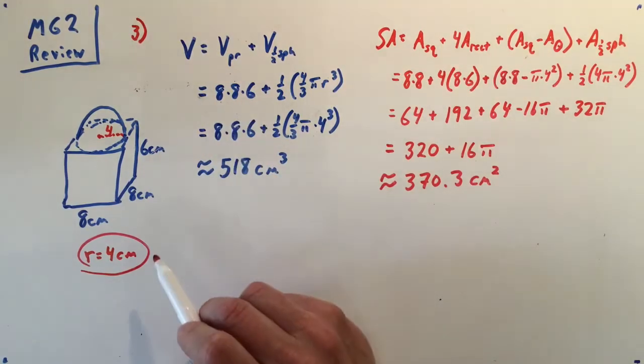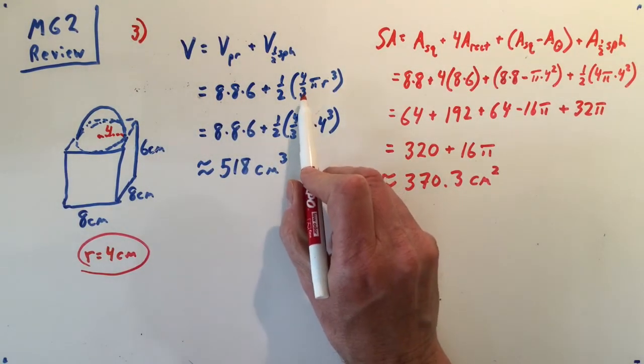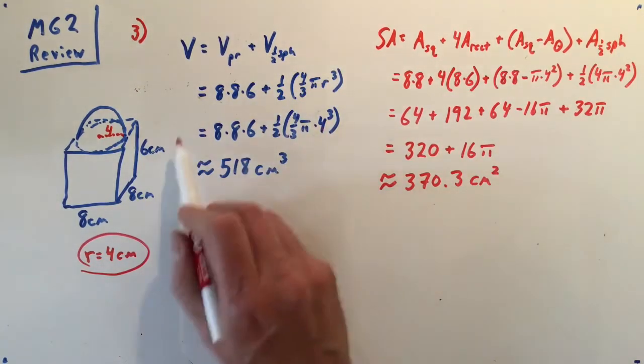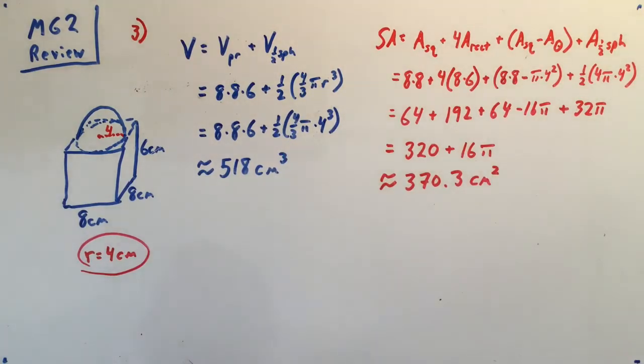Let's go to our volume formulas: volume of a prism plus volume of the half sphere. Prism is eight by eight by six. Volume of a sphere is 4/3 π r³, and we have half of that, and the radius is now four, so just plug that in and that'll get you the volume.